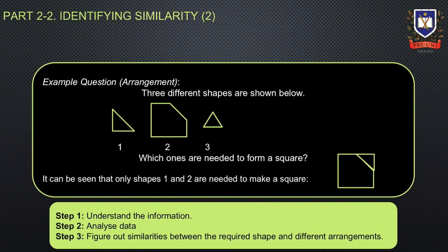Let's have a look at some example questions first. Arrangement questions will typically provide students with information presented through a visual stimulus. It is up to the students to determine the similarities between the arrangements of different shapes through rotating, mirroring, or tessellation.